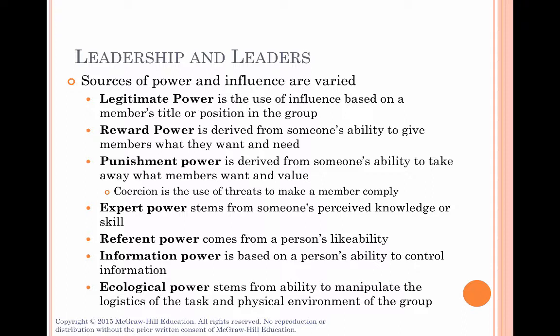Information power comes from someone who has control over the dissemination of information. The person with this power may have the information itself or know where the information is and how to access it. If a leader is the only source of information and refuses to provide it to the members, or only gives certain information and keeps other information away from them, this can impact the ability of the group to meet its goal. Finally, there's ecological power. This stems from someone's ability to control the physical environment and the work processes of the group — having the power to decide where the group meets, how the room is arranged, who's doing what during the group meetings. The case study shows that Terri-Ann didn't use this power to organize the group's processes, and the group suffered as a result.